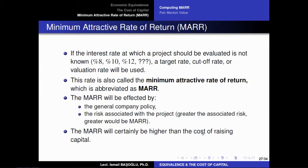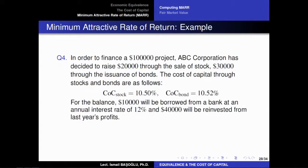We would like to determine a minimum attractive rate of return to evaluate project investments for ABC Corporation. ABC Corporation is going to invest in a project that costs $100,000. We are interested in determining the MARR to evaluate this project. What we need to look at is how they have raised this $100,000.